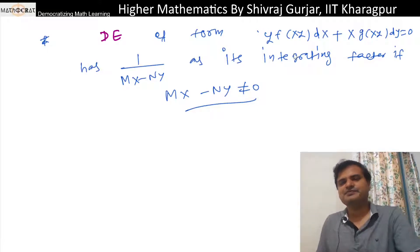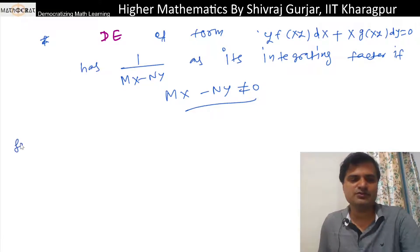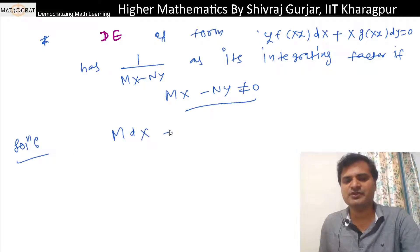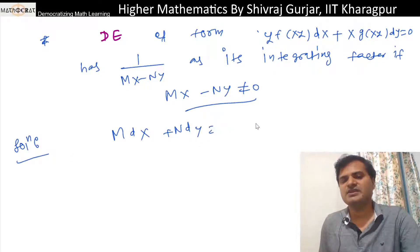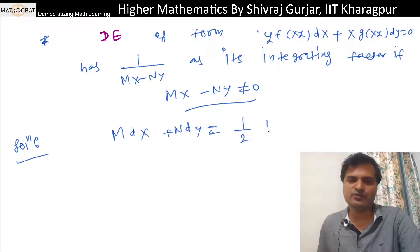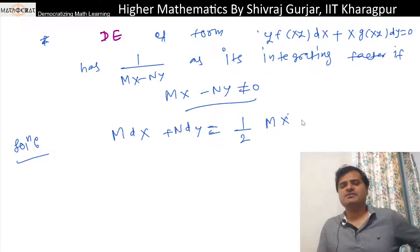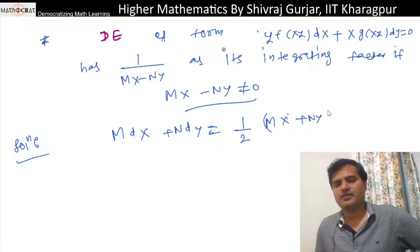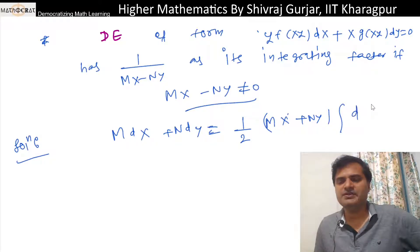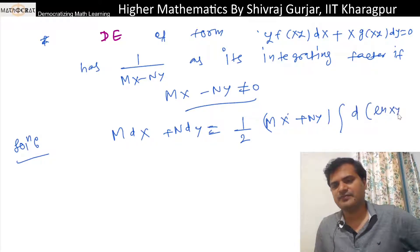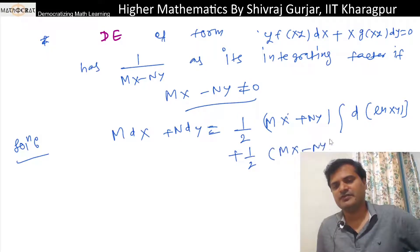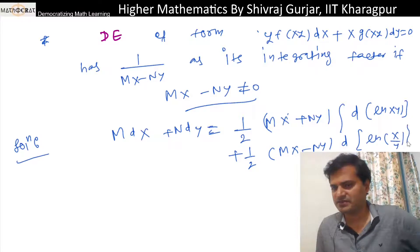Now let's look at this. Let's see if we can prove this — in fact, y·Mdx + N·dy can be written. In a previous lecture we discussed that this can be written as (1/2)(Mx + Ny)·d(ln xy) plus (1/2)(Mx minus Ny)·d(ln(x/y)).